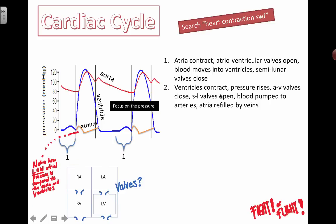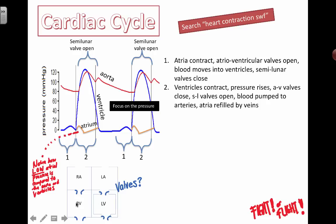Stage two is when things get really exciting. The ventricles are contracting and blood is coming out. The atrioventricular valves are going to be closed, and the semilunar valves are open. Blood is pumped to the arteries, and at the same time the atria are going to refill. Notice how high the pressure jumps in both the ventricles and the aorta — squeezing the ventricles causes very high pressure inside and in the aorta as blood is forced out.